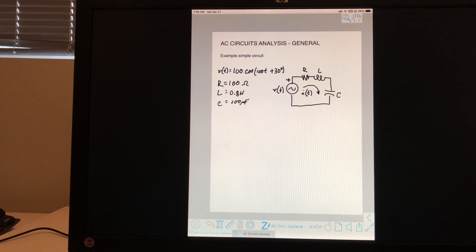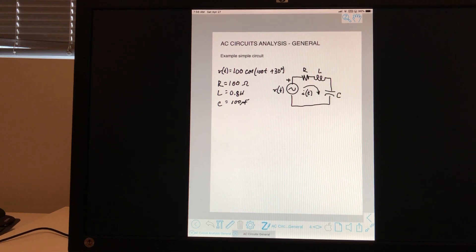What I want to do now is just take you through a simple circuit analysis. This is clearly what we have here, a voltage source which I'm just calling V of T.